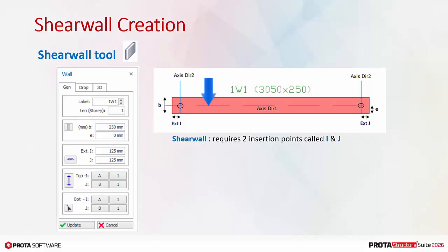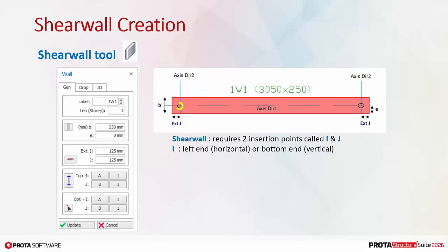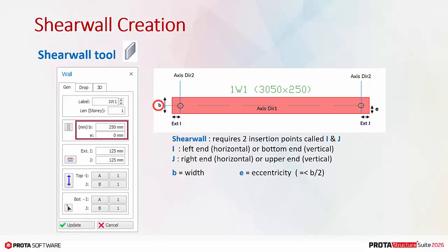One longitudinal axis along the wall, and an additional two other axes to create the start and end nodes. The I end is the left end of the horizontal wall or bottom end of a vertical wall. J is the right end of a horizontal wall or upper end of a vertical wall. B is the width of the wall. E is the eccentricity, measured from the center of the wall to the longitudinal axis. The E value must be equal to or less than half the width of the wall, meaning the longitudinal axis must be located at the edge or within the wall width.